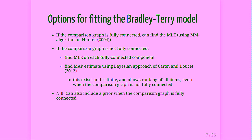In terms of fitting the model, we have a few options. If the comparison graph is fully connected, we can find the MLE. If not, there are two choices: find the MLE separately on each fully connected component, or take a Bayesian approach and introduce a prior that allows ranking of all items even when the graph is not fully connected. This MAP estimate, introduced by Caron and Doucet, exists and is finite in all cases.